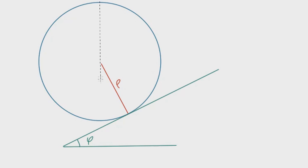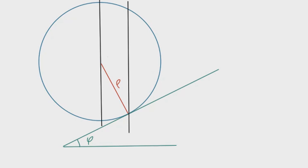I'll define a vertical line through the center of the circle and another vertical line through the point of interest. Since both lines are vertical they're parallel, and extending the tangent line lets us apply the transversal relationship. Because of that, this angle here is equal to this other angle — we can define this angle also as phi.